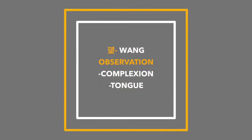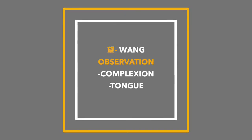Wang stands for observation — we observe the complexion of the patient's face. Is it red, like a person who sweats easily and gets hot, or is it very pale? Are there spots anywhere? Is there a certain color like green or yellow? The second thing we look at with complexion is the tongue — the tongue size, the tongue coating, any little red spots on the tongue, and any scalloping on the sides.